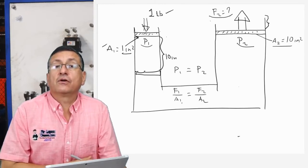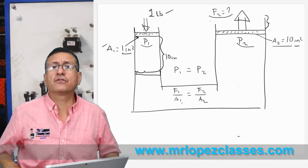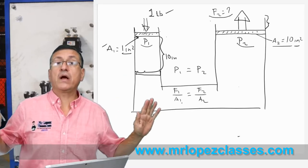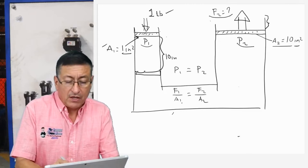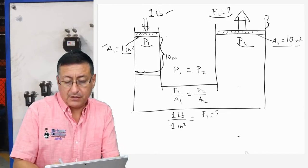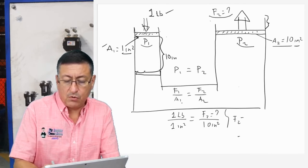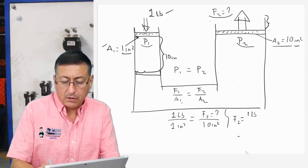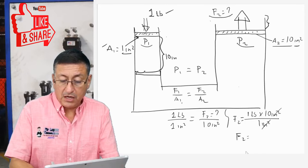Because the area of the second piston is ten square inches, we are going to use the simple formula of Pascal's Law: pressure equals force divided by area. Because pressure is constant, the situation in position one should equal the situation in position two. So force one divided by area one equals force two divided by area two. Force number one is one pound, area number one is one square inch. Area number two is ten square inches. So force number two equals one pound times ten square inches divided by one square inch — the square inches cancel.